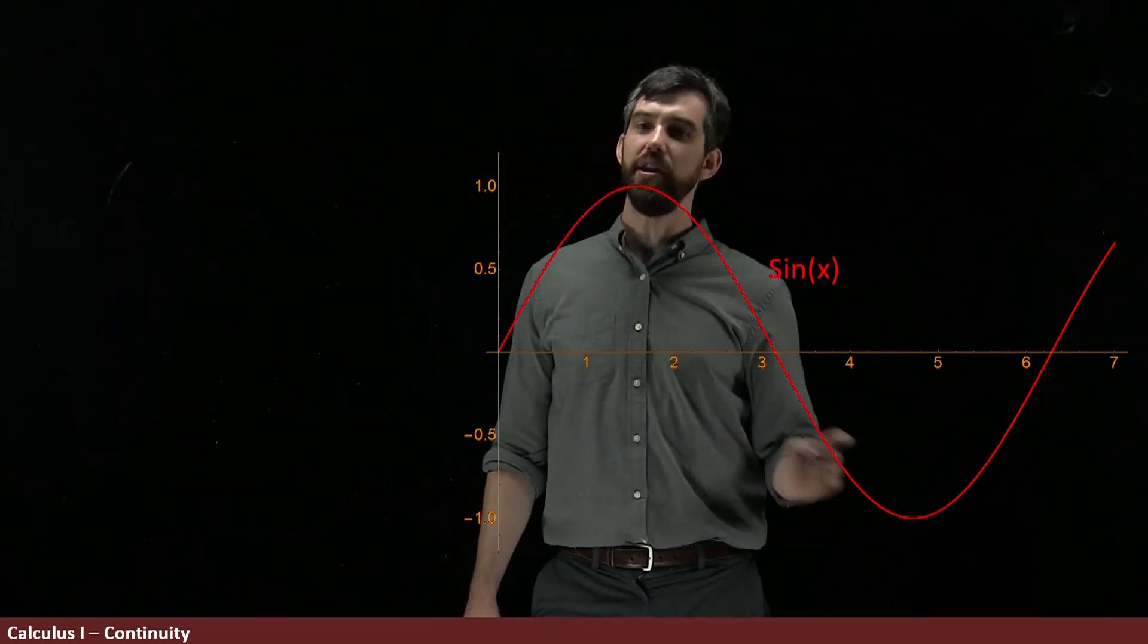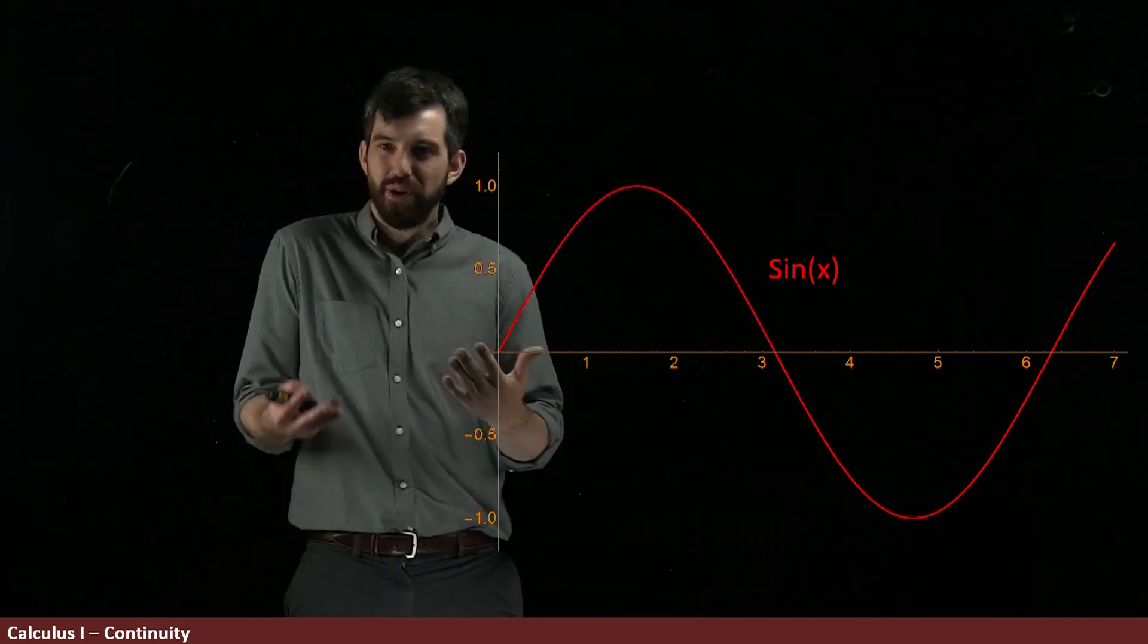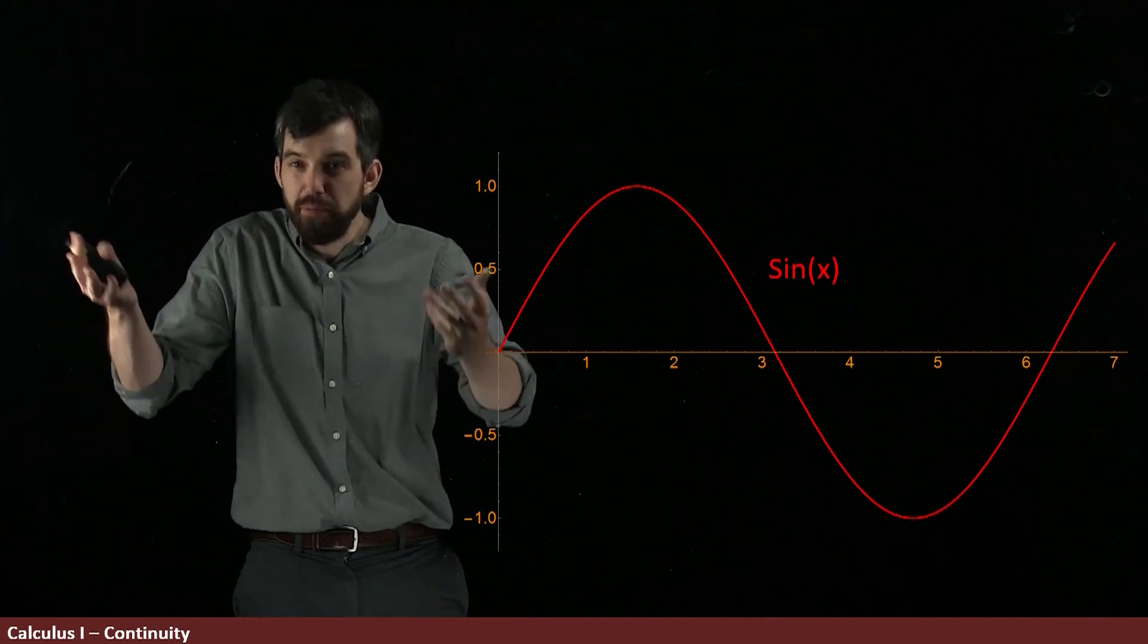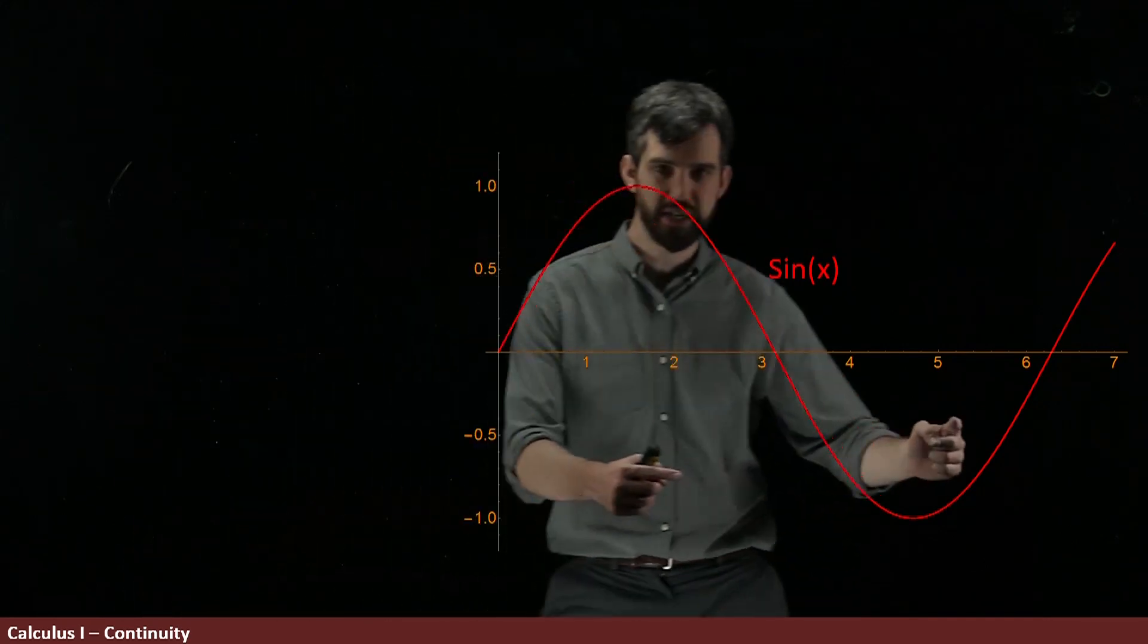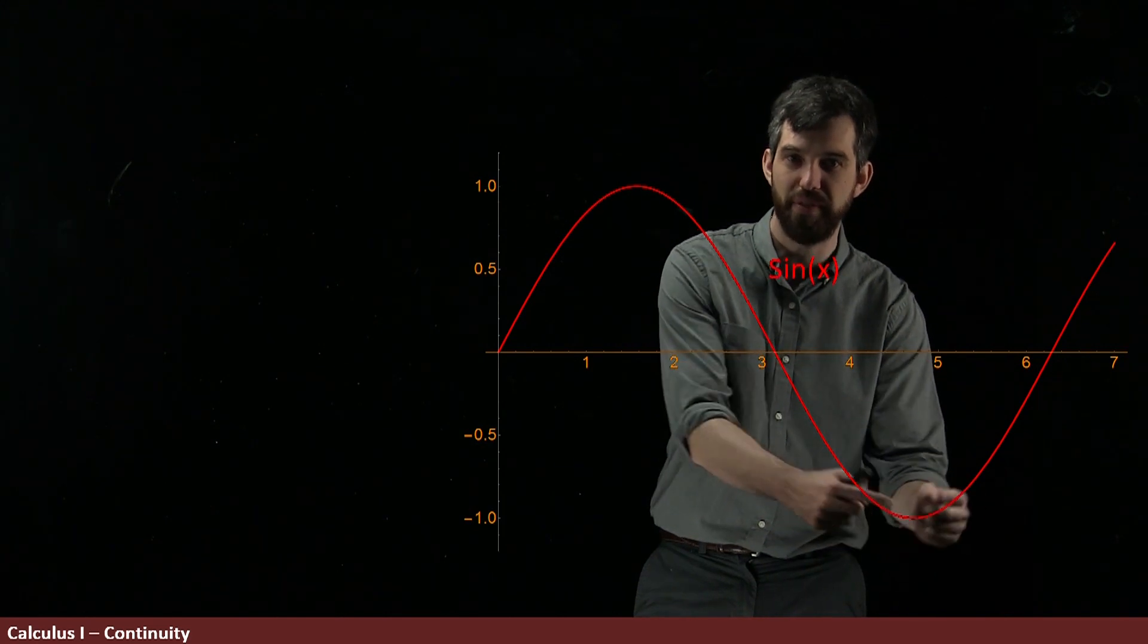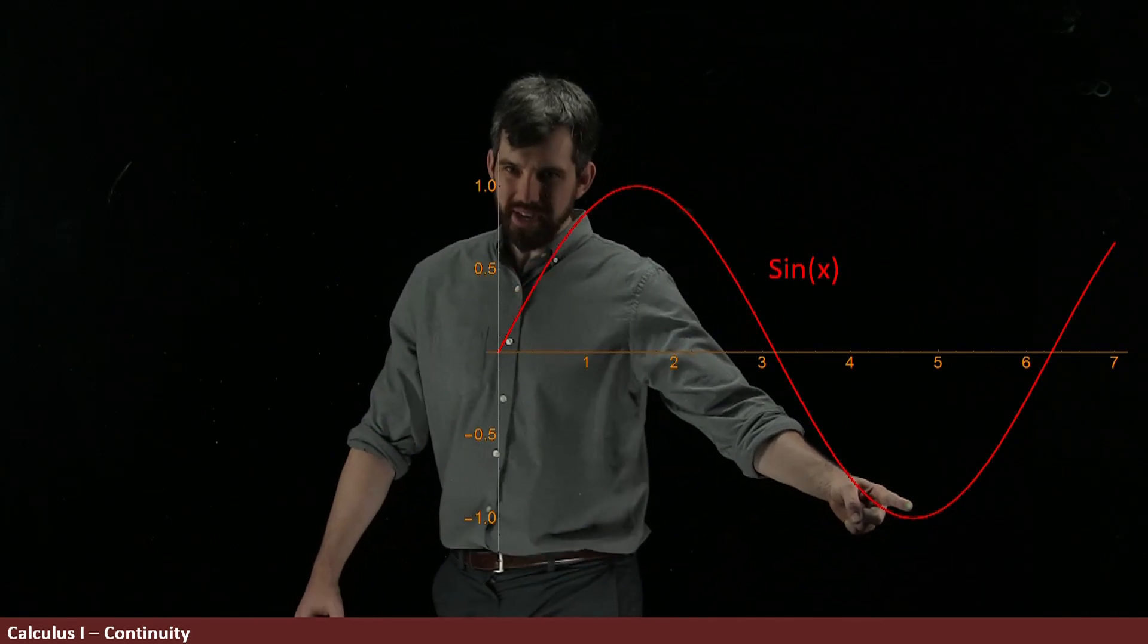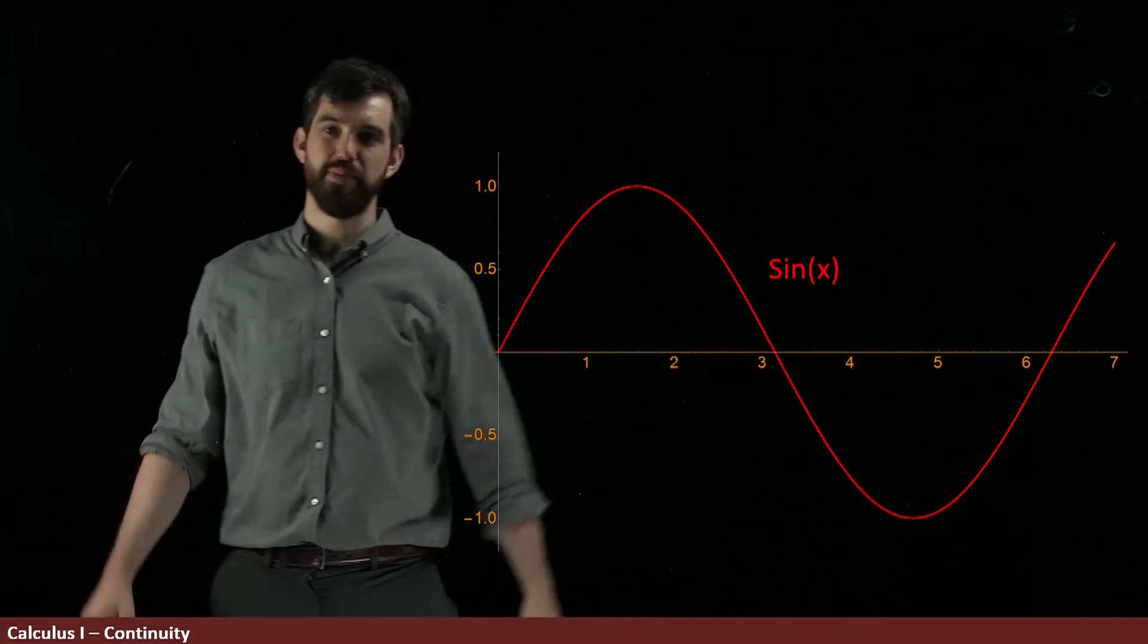Likewise if I want to go down here, this is the point 3π over 2. If I want to figure out what the limit as x goes to 3π over 2 of sine of x is, I look here and I can see what's going on. The limits from the left and the right are just whatever that point is, and so in this case it's minus 1.